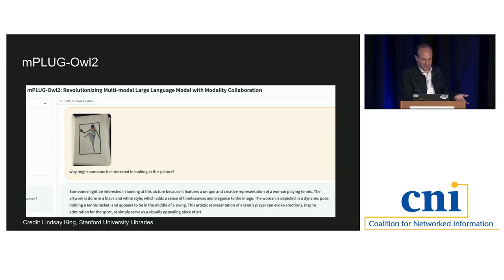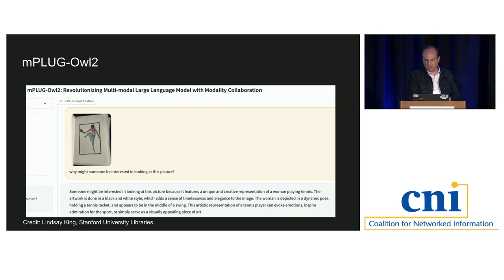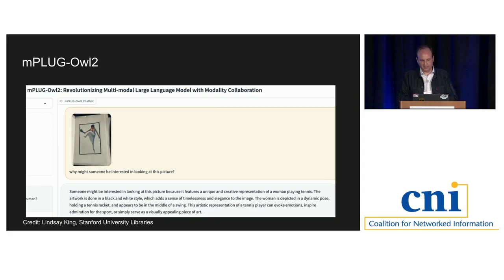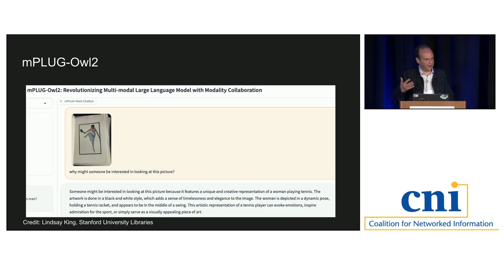Our art librarian Lindsay King at Stanford had some interesting newly acquired work. She asked the multimodal model why somebody might be interested in looking at this picture. The model said it's a unique and creative representation of a woman playing tennis, done in a black and white style — not entirely accurate, but forgivable. It mentions the dynamic pose, that she's holding a tennis racket in the middle of a swing, and that it can evoke emotions. Some of this is LLM cruft, but the point is it can see the picture and interpret it.